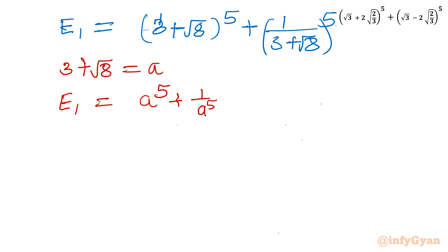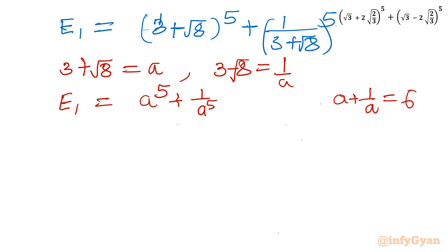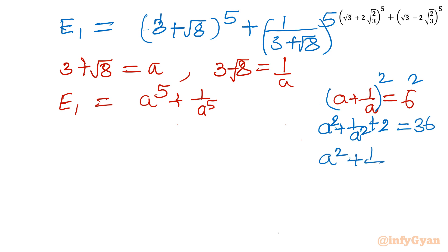Now I calculate a + 1/a. Since a = 3 + √8 and 1/a = 3 − √8, adding gives a + 1/a = 6. And a·(1/a) = 1. Squaring: a² + 1/a² + 2 = 36, so a² + 1/a² = 34.